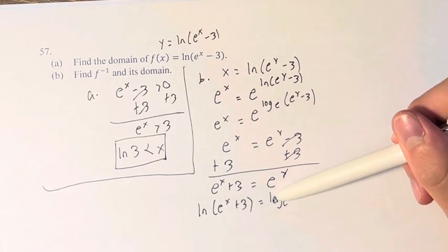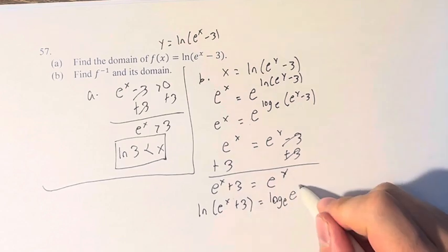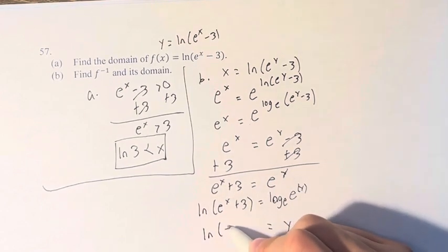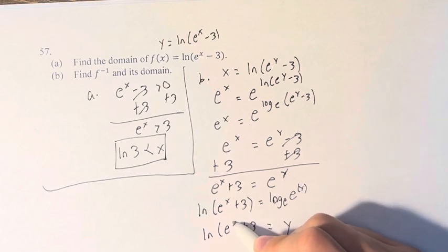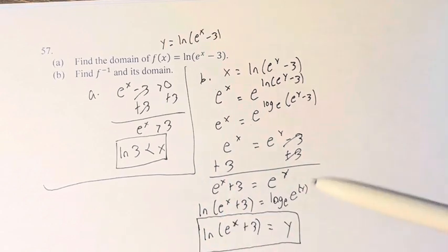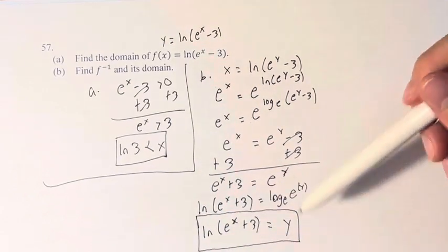Like I said earlier, logarithm plus exponent means you just get what's inside. So this is just y is equal to ln(e^x + 3). So this is the inverse of the function.